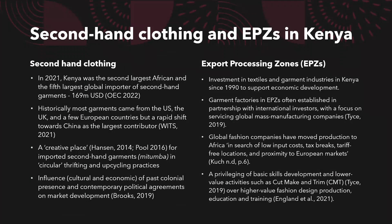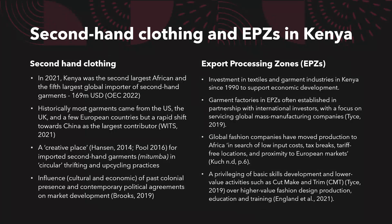Export processing zones (EPZs) represent an investment in textiles and garment industries in Kenya since the 1990s to support economic development. Garment factories in EPZs are often established to drive economic development and generate jobs in partnership with international investors. As the literature highlights, there is a strong focus on servicing global mass manufacturing companies in these EPZs, as global fashion companies have moved their production into Africa and Kenya specifically in search of low-cost inputs, tax breaks, tariff-free locations and proximity to European markets. What we find is a privileging of basic skills development and lower-value activities such as cut, make and trim, over higher-value fashion design, production, education and training — which has in some ways a negative impact on the local market and production capabilities.